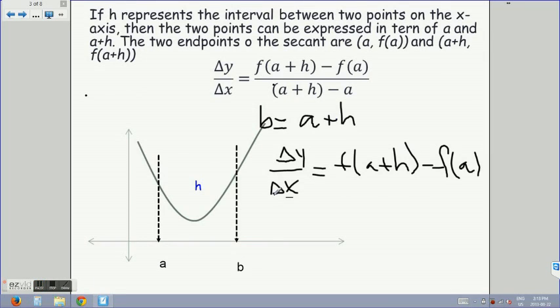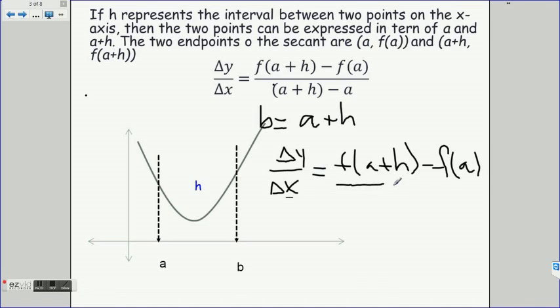So we can then say that delta y over delta x is equal to f at a plus h minus f at a, all over, if we want we can simplify the denominator. If we were to remove the brackets, we can see that the a's will cancel out, and all we're left with is h. And there's our equation for the average rate of change. We can use this equation if we are given the equation or the relation that describes this curve.